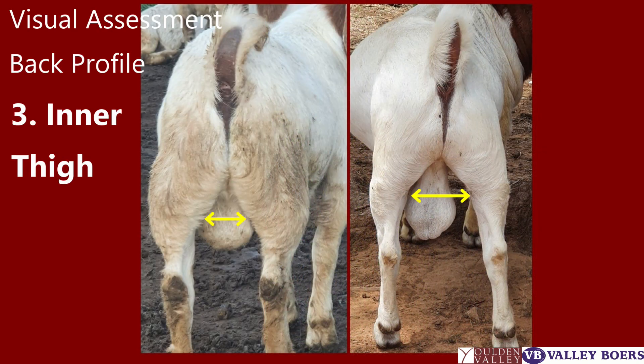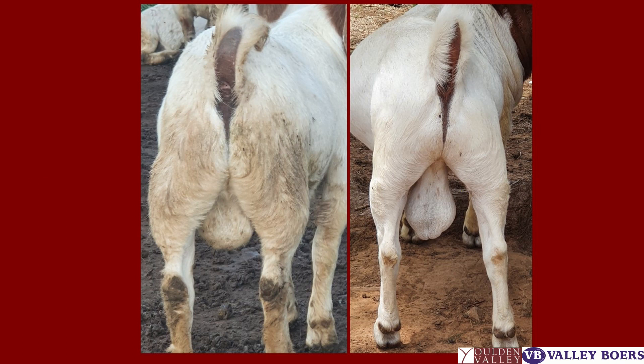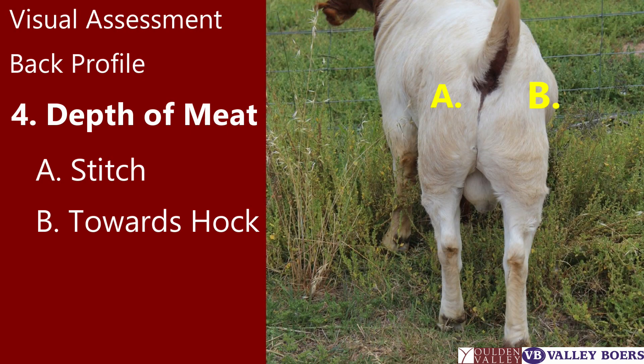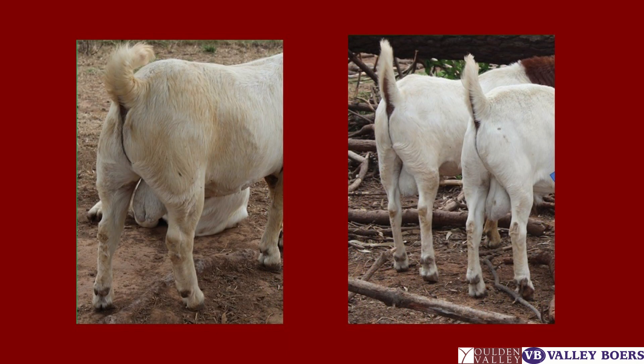This slide clearly shows on the left a buck with good inner muscling and on the right a buck with less inner muscling. This slide shows the depth of meat through the stitch and also down to the hock, showing a full back end. Both pictures show animals under the same conditions and a vast difference between the two — the buck on the left has an excellent back end and the bucks on the right are lacking.